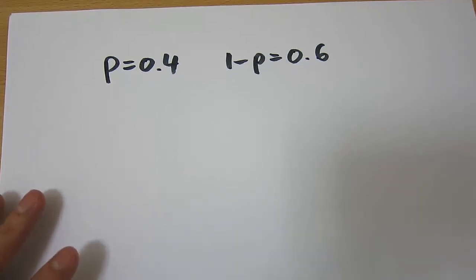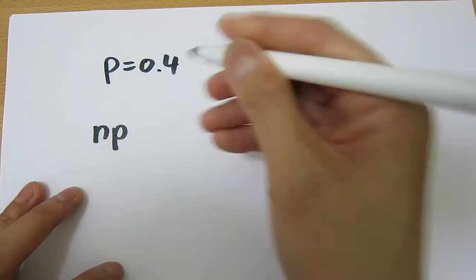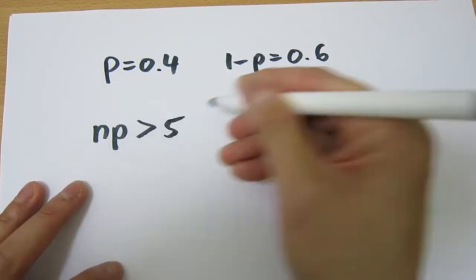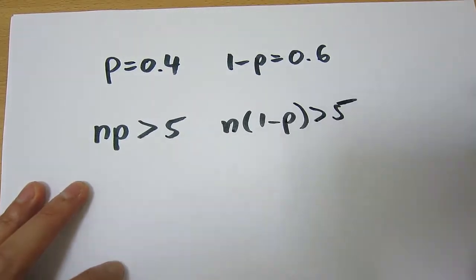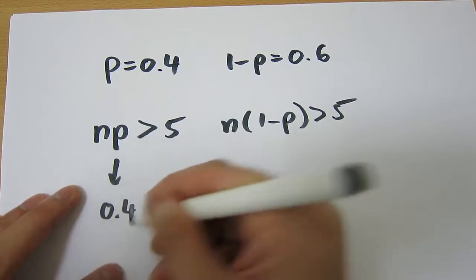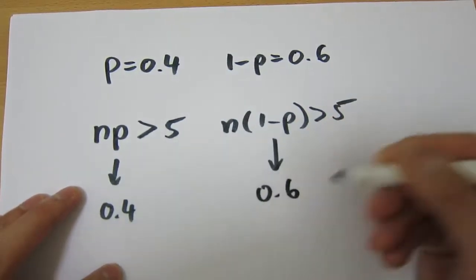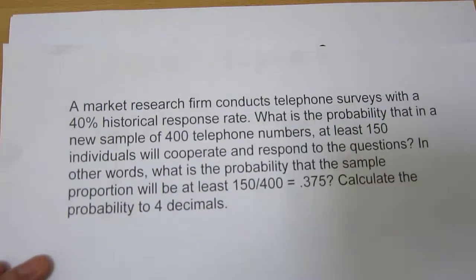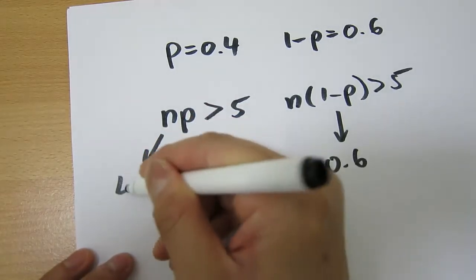Now before we can go ahead and calculate probabilities, we need to assume this follows a normal distribution. And to do that, we have to make sure these conditions hold. So NP must be bigger than 5, and N(1 minus P) must be bigger than 5. In this example, we know P is 0.4, 1 minus P is 0.6, and N is our sample size of 400.